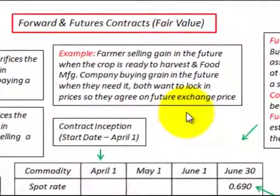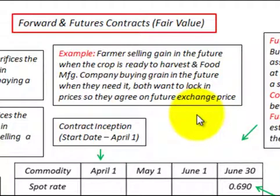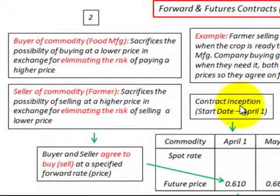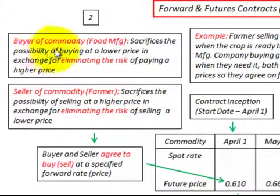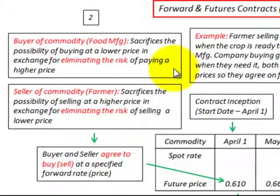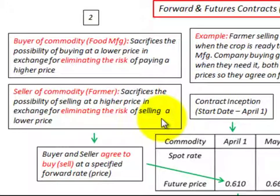A good example of these contracts would be where a farmer is selling grain in the future when the crop is ready to harvest, and a food manufacturing company like a cereal company would be buying grain in the future when they need it. Both want to lock in prices so they agree on a futures exchange price. At the contract inception, the buyer and seller agree to buy and sell at a specified forward rate or forward price. By doing that, the buyer of this commodity — the food manufacturer — sacrifices the possibility of paying a lower price in exchange for eliminating the risk of paying a higher price, whereas the seller of the commodity, the farmer, sacrifices the possibility of selling at a higher price in exchange for eliminating the risk of selling at a lower price.